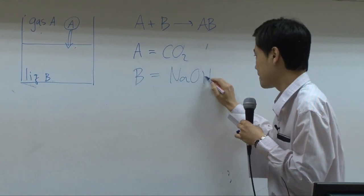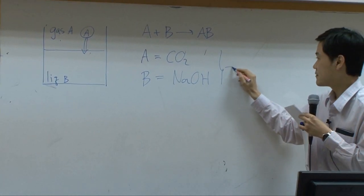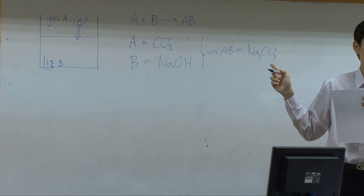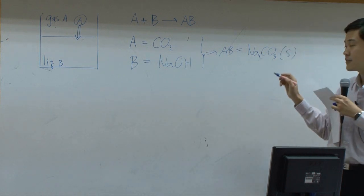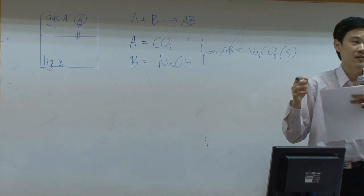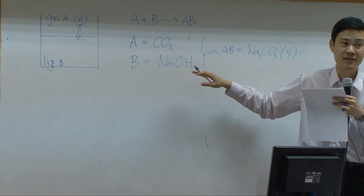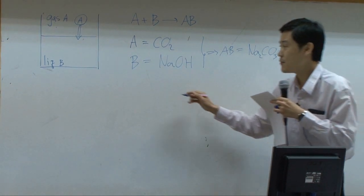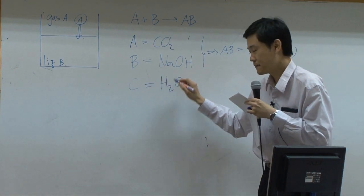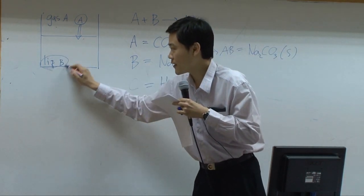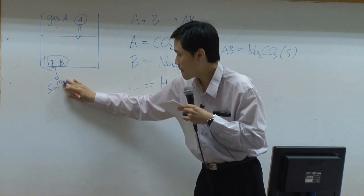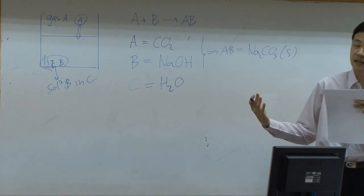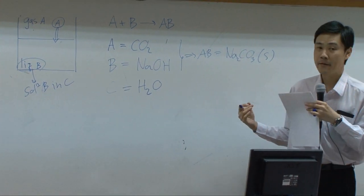Before we conduct a shell balance, suppose A is carbon dioxide and B is sodium hydroxide. Then A plus B gives AB, which would be sodium carbonate — a solid. Normally sodium hydroxide is prepared as a solution, so in reality you have another species C, which is water. So instead of pure liquid B, you have a solution of B in C, making the system even more complicated with more species.